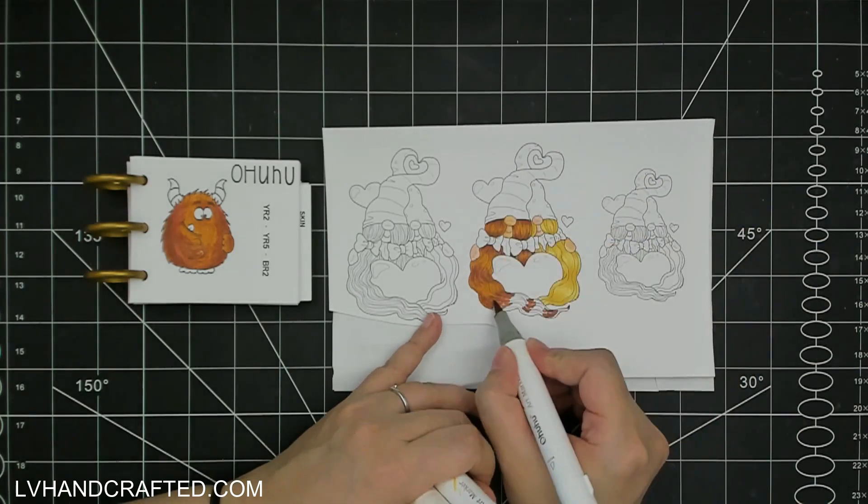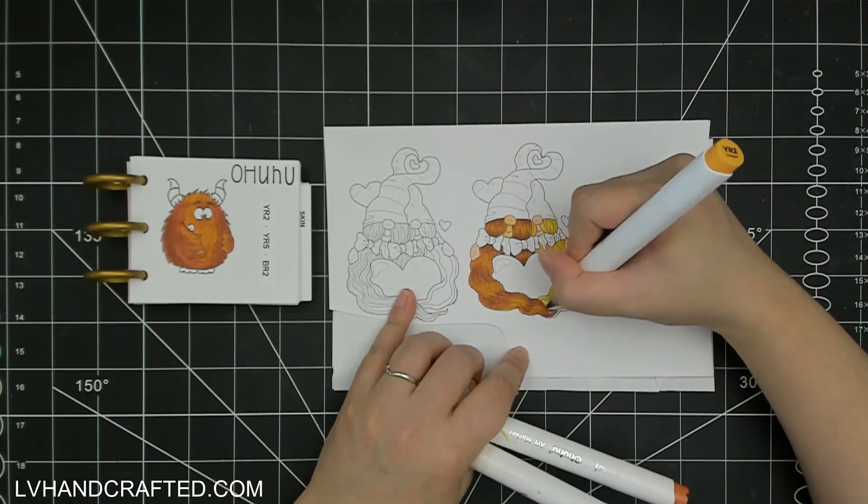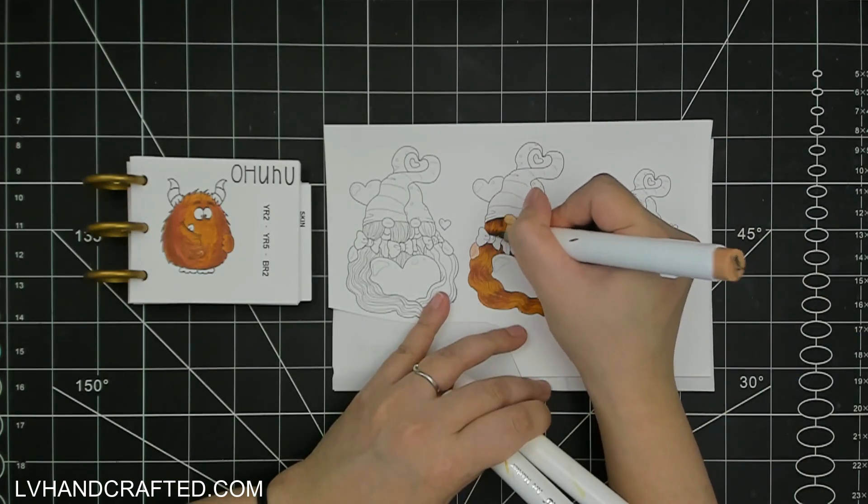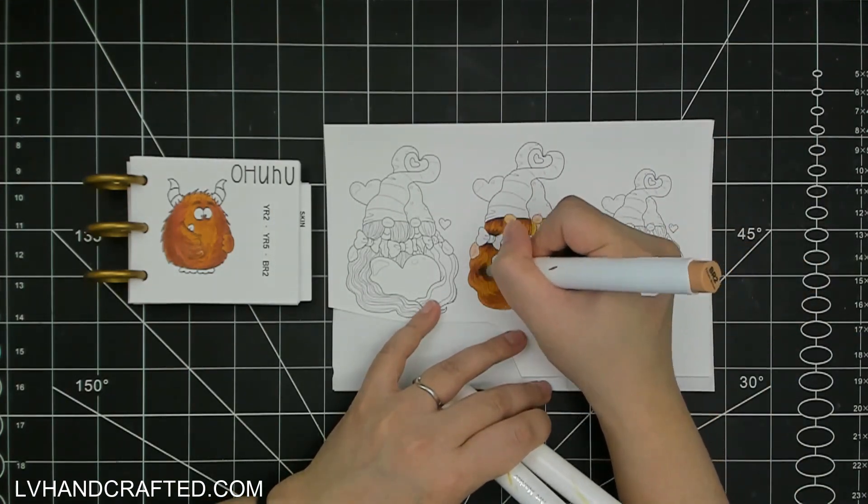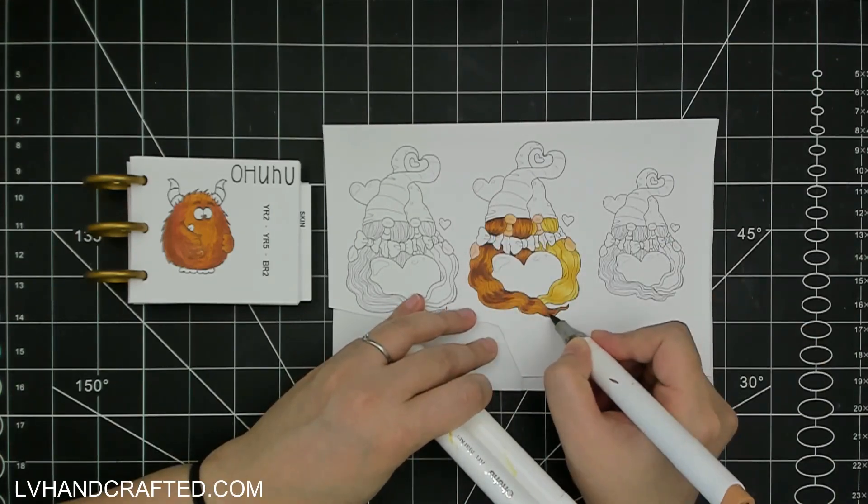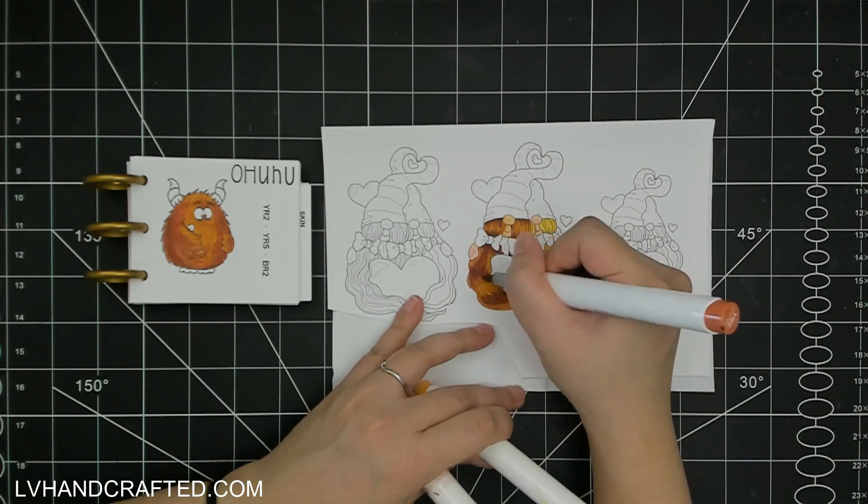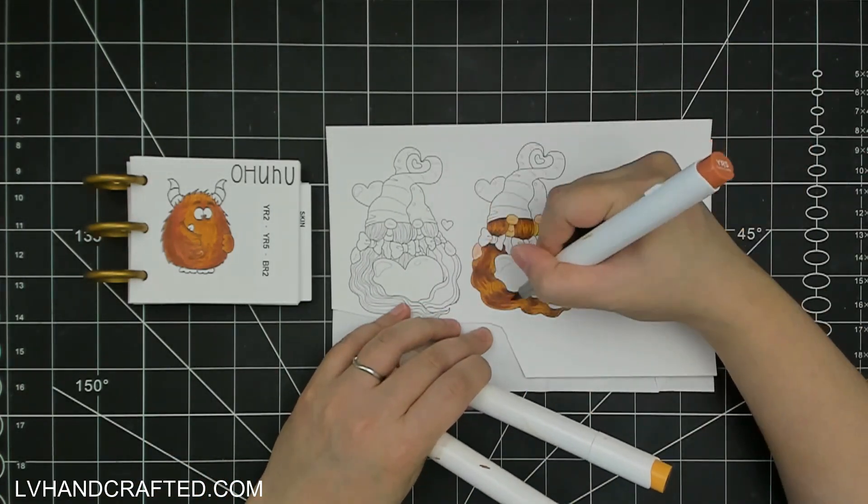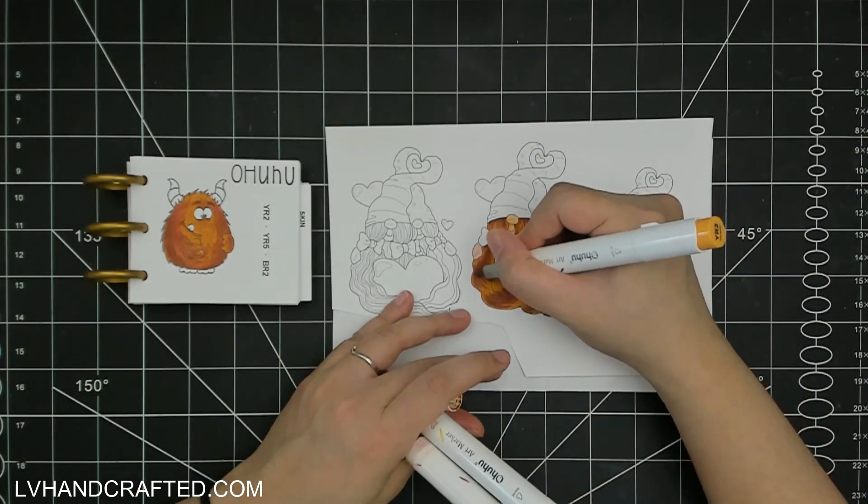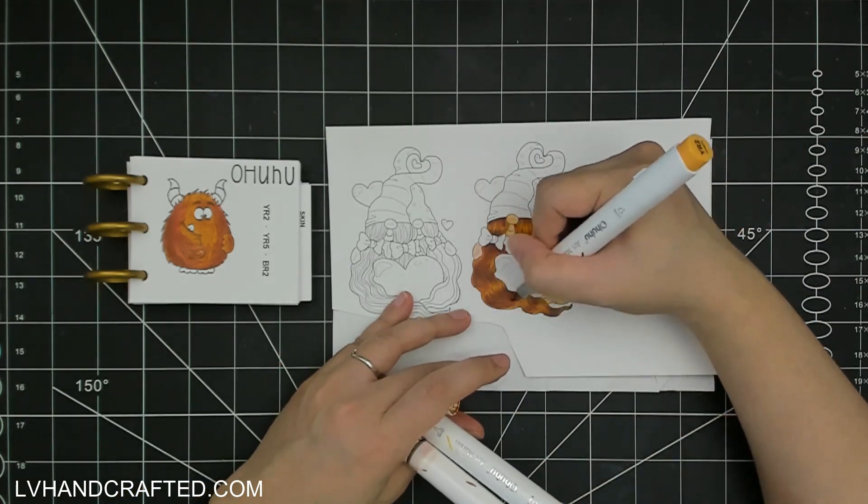I am coloring with my Ohuhu markers. I have my swatch book off to the side, so if you own Ohuhus as well and you're interested in the color blends I'm using, they are on screen for you.